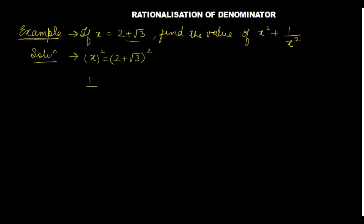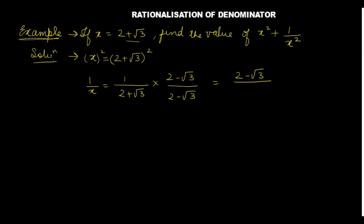Then we have 1 by x. So 1 by x is equal to 1 over 2 plus root 3. To rationalize, we multiply by 2 minus root 3 over 2 minus root 3. The denominator becomes 4 minus 3, which is 1. So 1 by x is equal to 2 minus root 3.